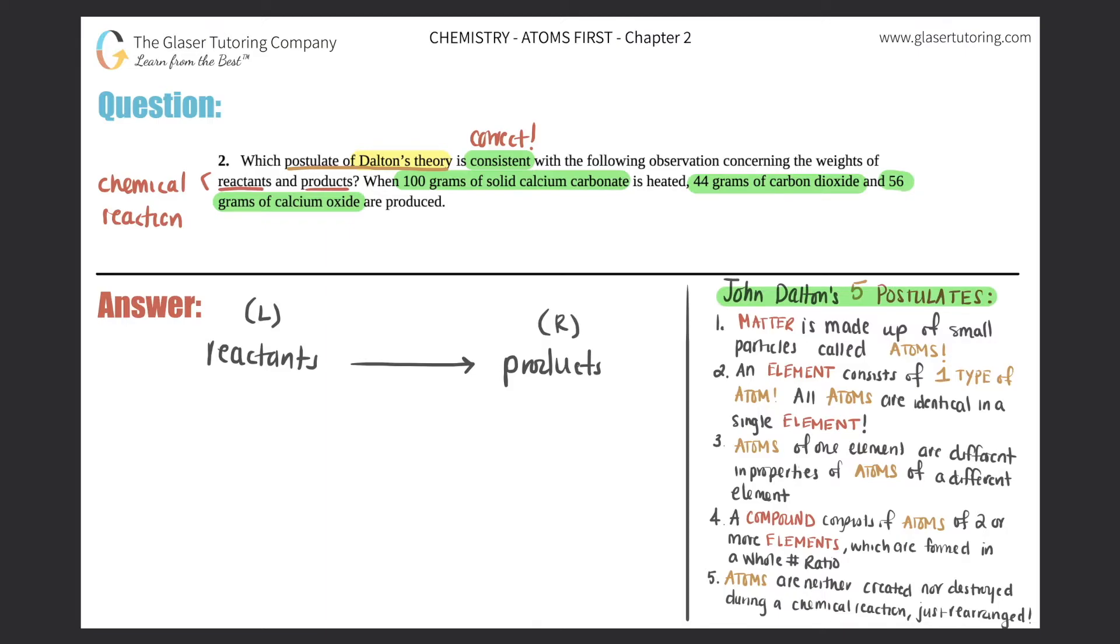Now here they're saying 100 grams of solid calcium carbonate. So this is only chapter two, we didn't do nomenclature yet. So I'm just going to say calcium carbonate is heated and 44 grams of carbon dioxide and 56 grams of calcium oxide are produced.